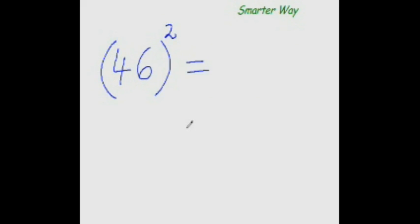Let's take one more example of number less than 50. As you can see that 46 is 4 less than 50. So, immediately subtract that 4 from 25. 25 minus 4 is 21. And square of 4 is 16. So, 1, 6. That's your answer.